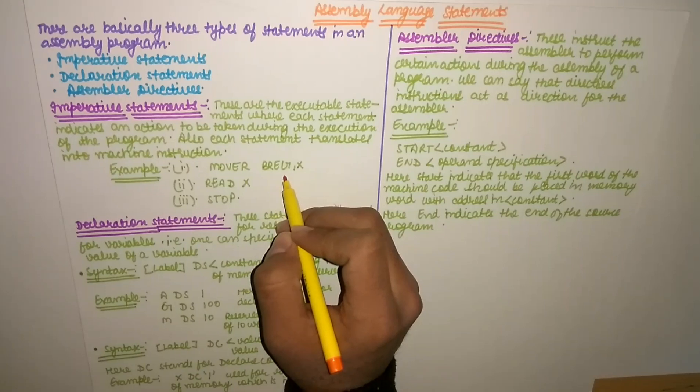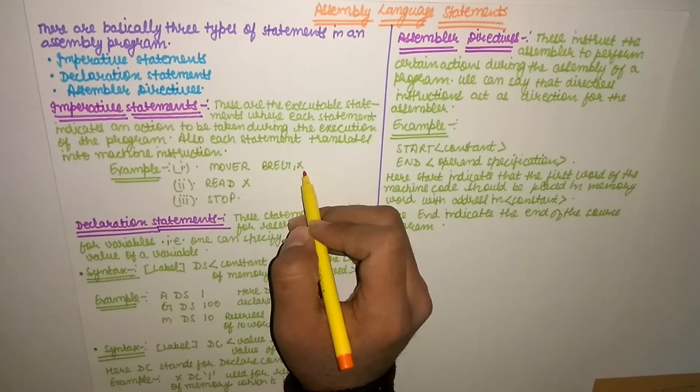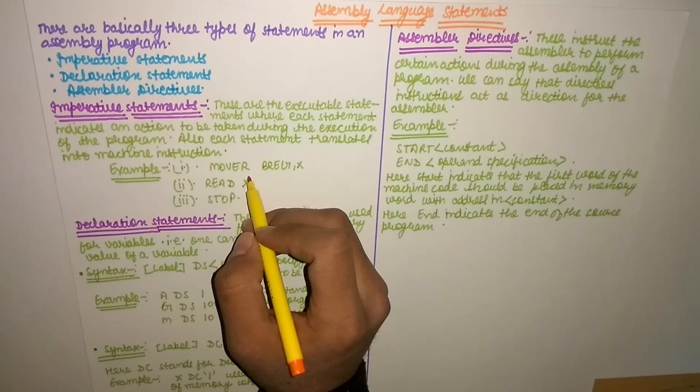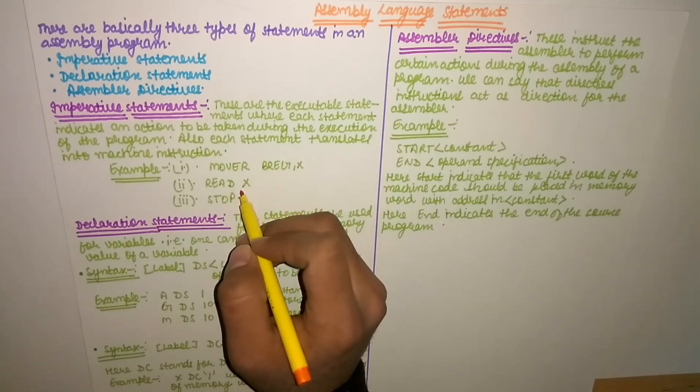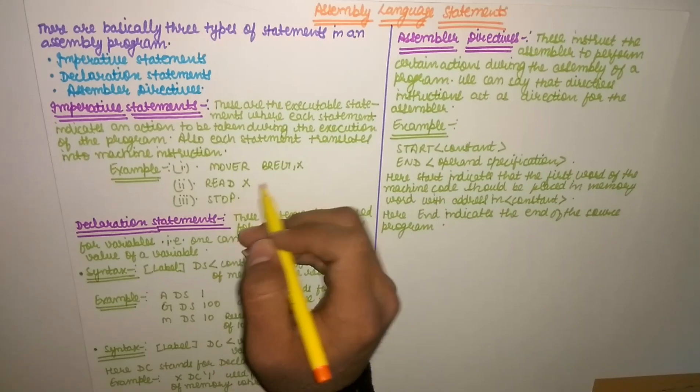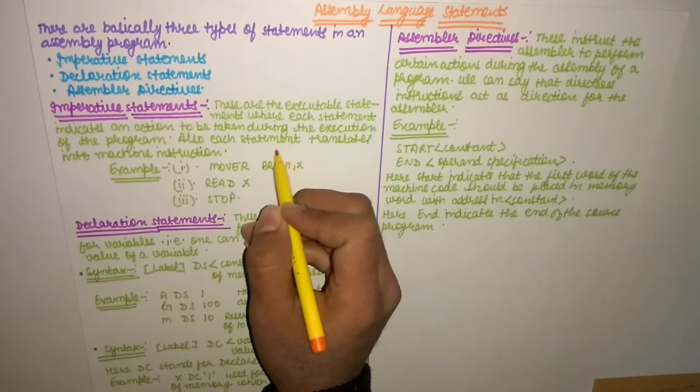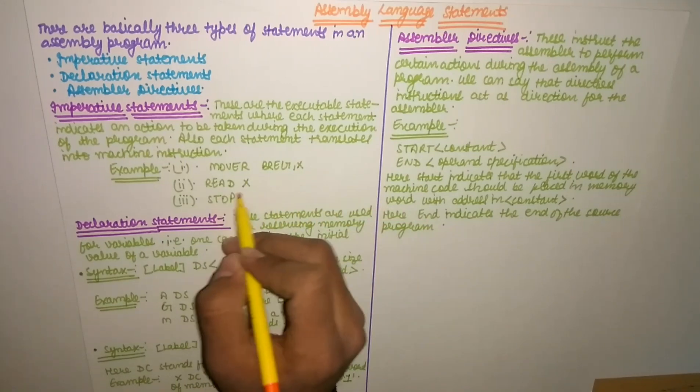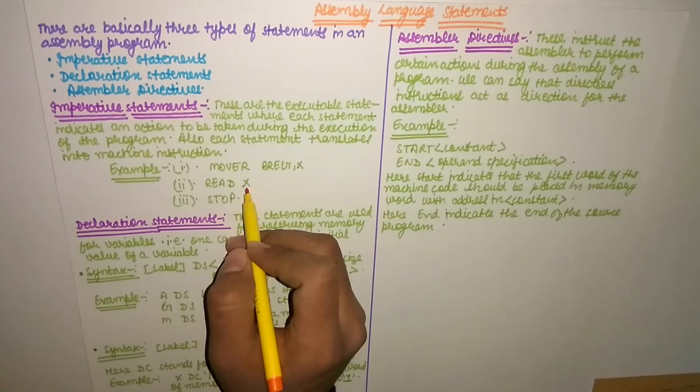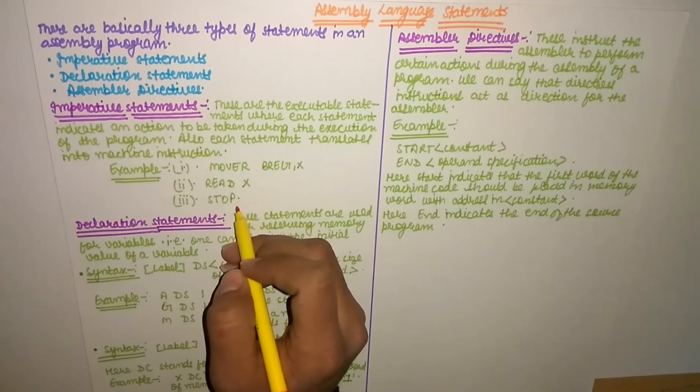This is the memory operand. So mover means to move from the memory into the register, and read X means read into the register. So move from the memory into the register, register operand, memory operand. Then read X, read into the register, X ki value read ho gai and then stop.